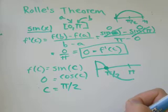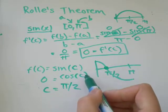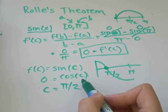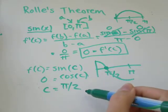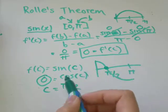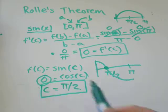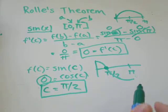You can double check that on your calculator. Type in cos of pi over two, make sure your calculator is in radiance mode, and you should get equals to zero. So our official answer would be c equals pi over two.